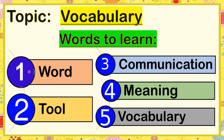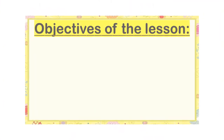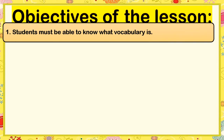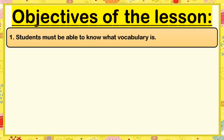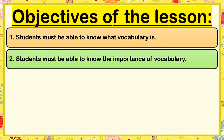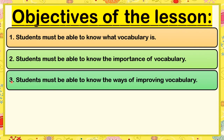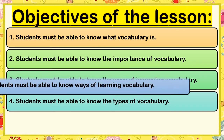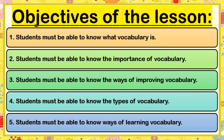So these five words, class, are going to help us better understand our topic for today. Now class, let us read the objectives of our lesson for this week. First, students must be able to know what vocabulary is. Second, students must be able to know the importance of vocabulary. Number three, students must be able to know the ways of improving vocabulary. Number four, students must be able to know the types of vocabulary. And the last one, students must be able to know ways of learning vocabulary.